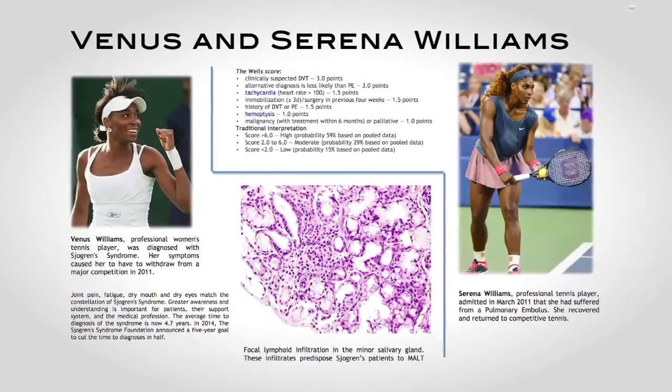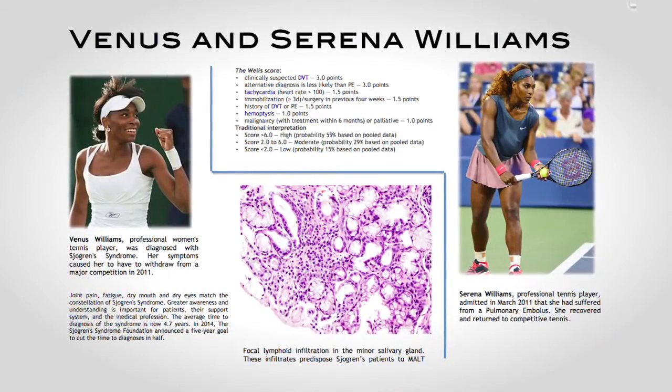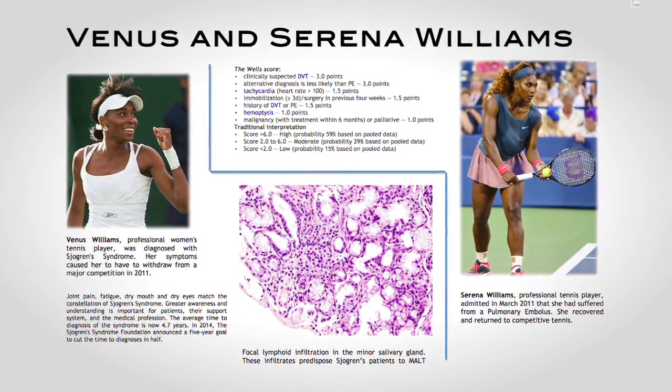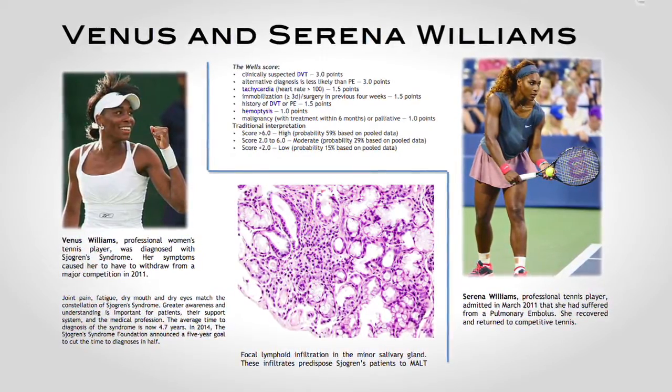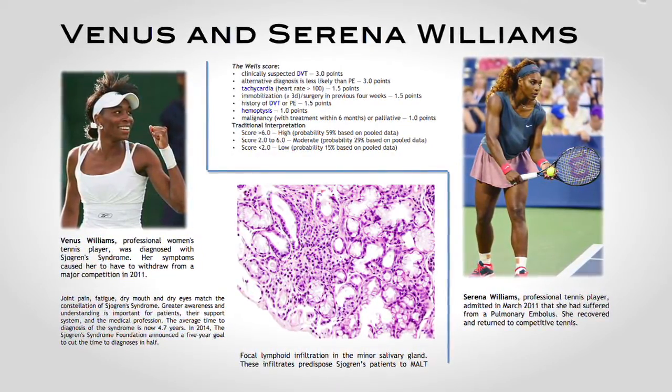For example, Venus Williams has Sjögren's syndrome — a syndrome that causes joint arthralgias and also decreased salivation and decreased sweating. These are things that would potentially affect her tennis game. So not only do you think of Sjögren's syndrome as a laundry list of topics, but as a list of topics that might affect a person you know a lot about.